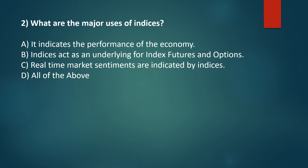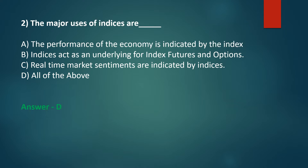What are the major uses of indices? Option A: It indicates the performance of the economy. Option B: Indices act as an underlying for index futures and options. Option C: Real-time market sentiments are indicated by indices. Option D: All of the above. The correct answer is Option D: All of the above.